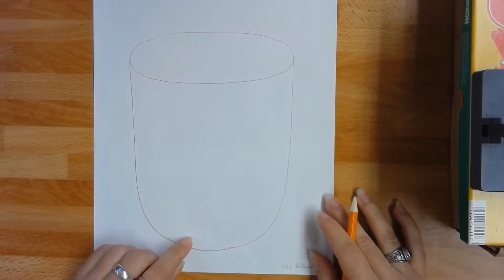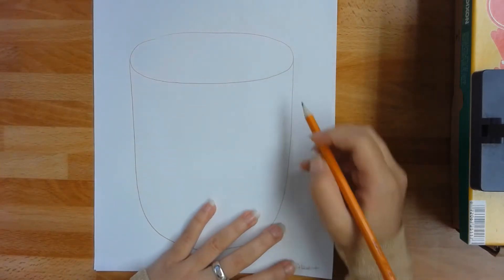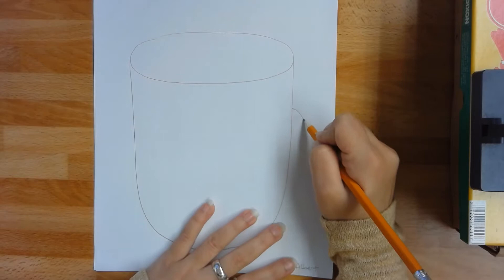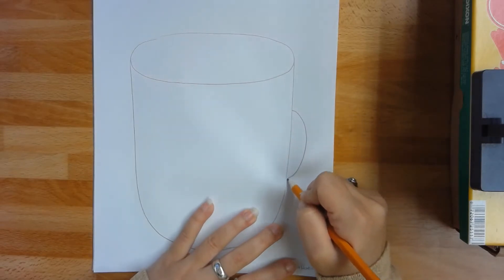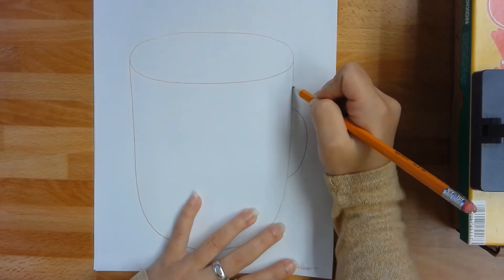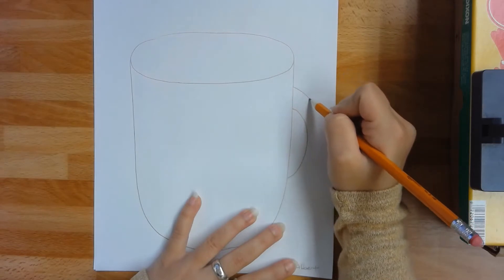Next I'm going to add the handle for my mug. So on one side I'm going to make a small curved line, and then I'm going to add another curved line that's a bit bigger.